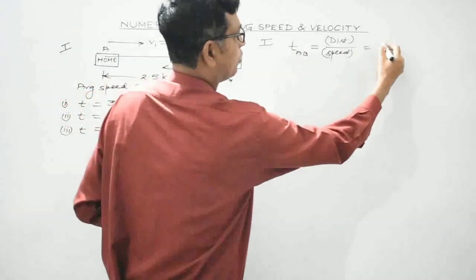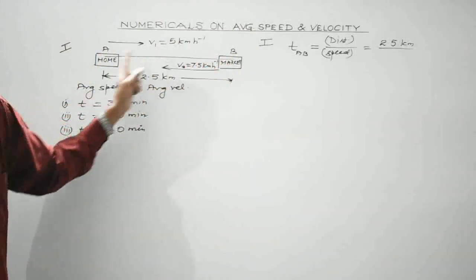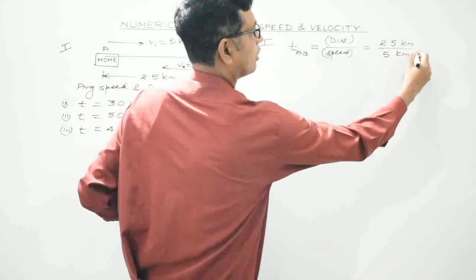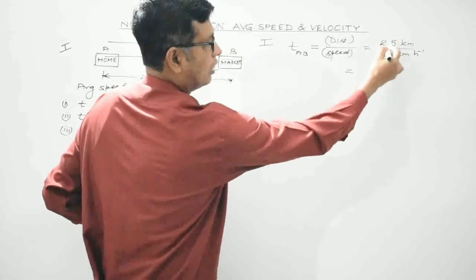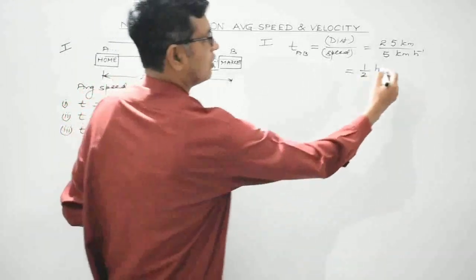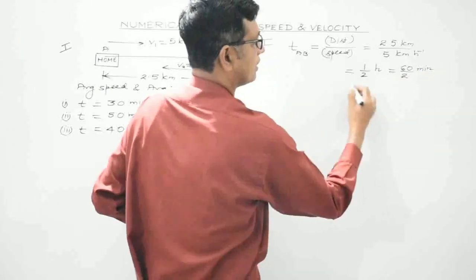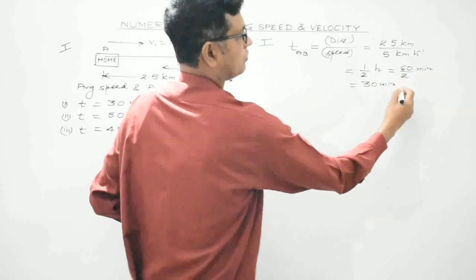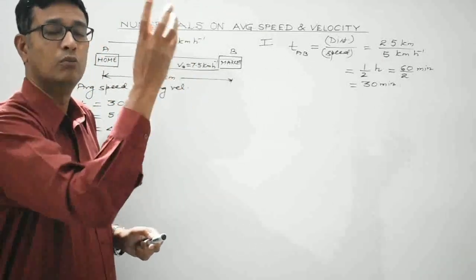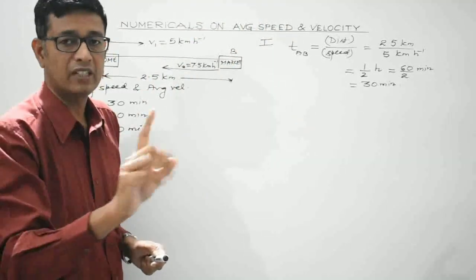In covering the distance from A to B, the distance is 2.5 km and the speed is 5 km per hour. So the time is 2.5/5 = 1/2 hour, which converts to 30 minutes.